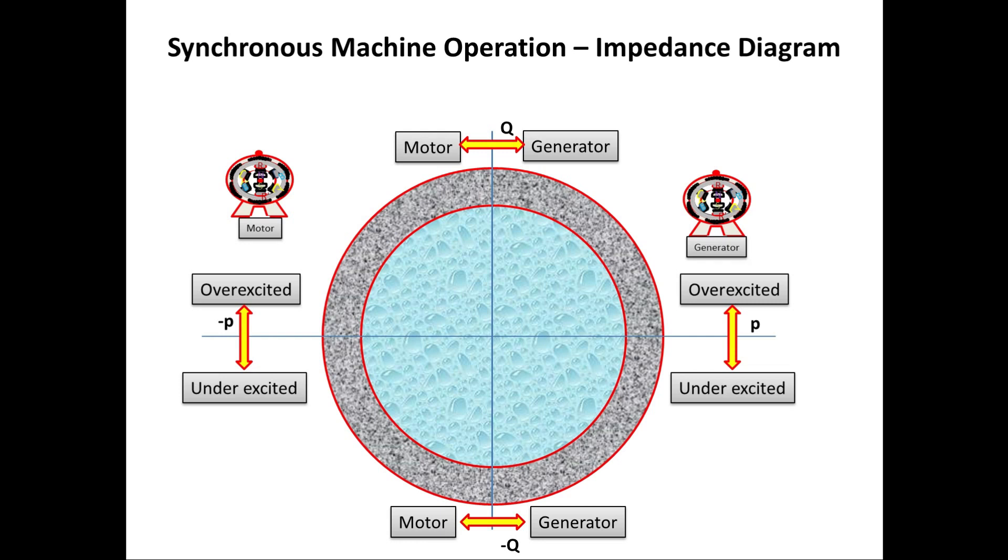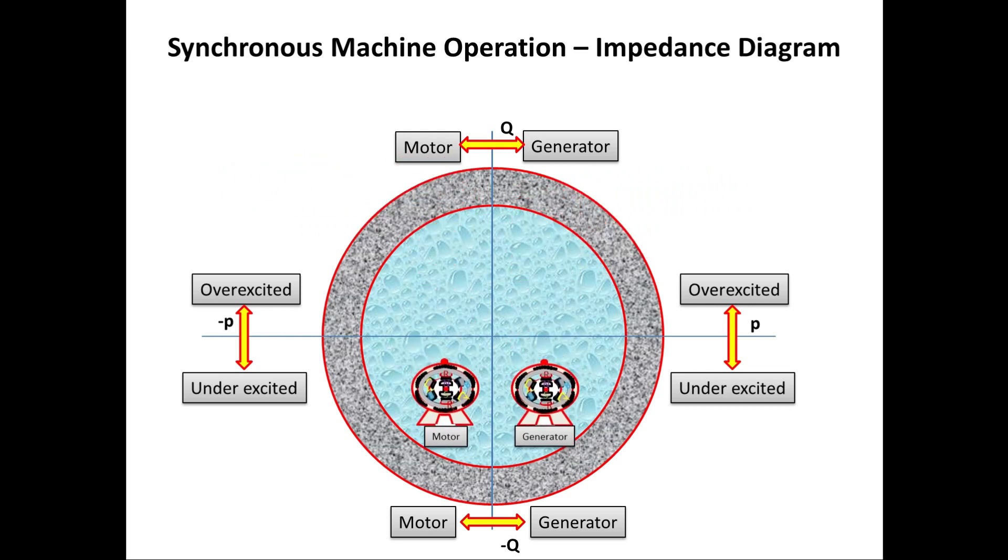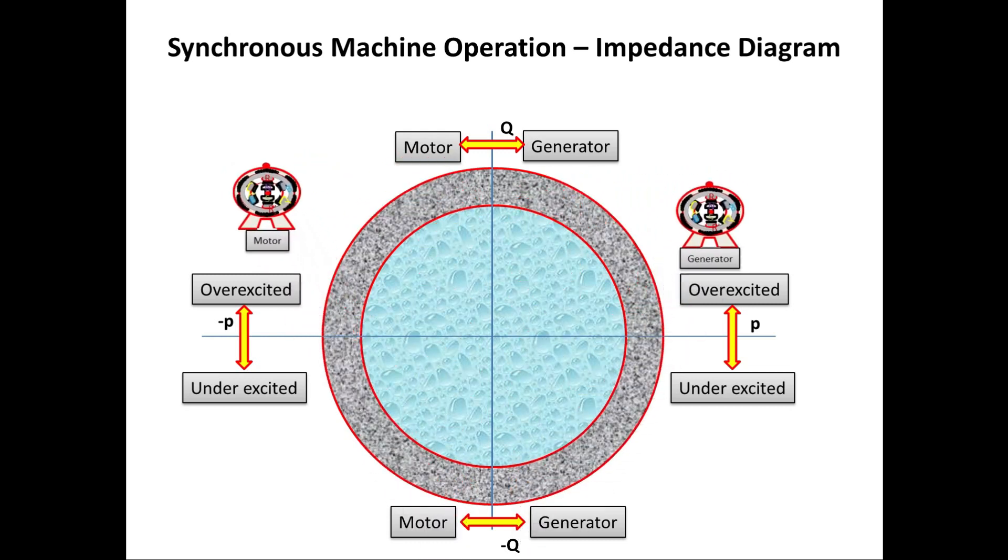If you see the motor, motor has to take power from source. So the power will be always negative. According to this, the motor work in second and third quadrant.